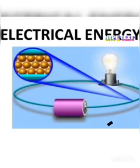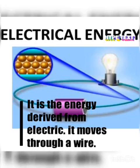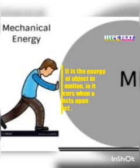This is electrical energy. Electrical energy is the energy derived from electricity — it moves through a wire. It is the movement of electric charges, and the movement through the wires produces electricity.